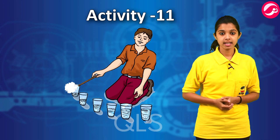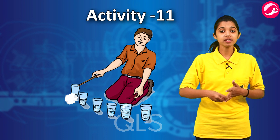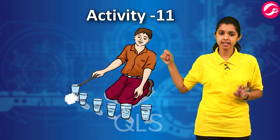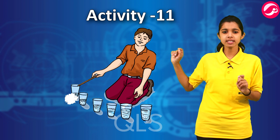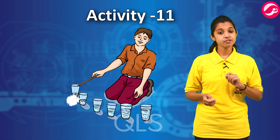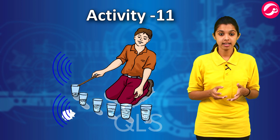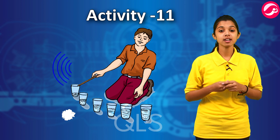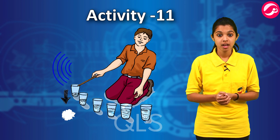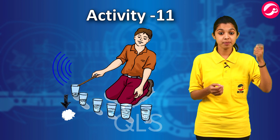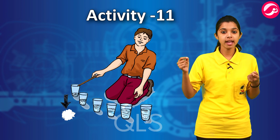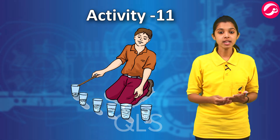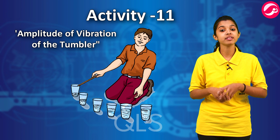Now suspend a small thermocol ball with a thread so that it touches the rim of the tumbler. When you strike the tumbler, it will vibrate, and you can observe how far the thermocol ball is displaced. The displacement of the ball is a measure of the amplitude of vibration of the tumbler.